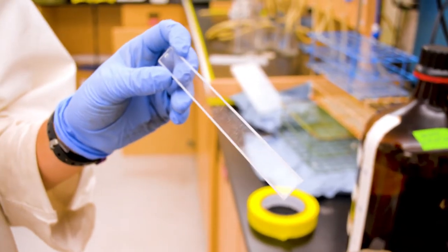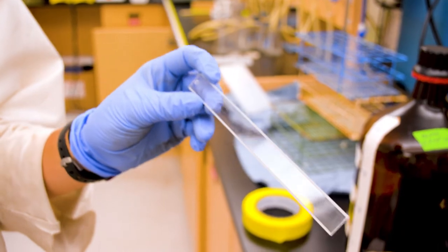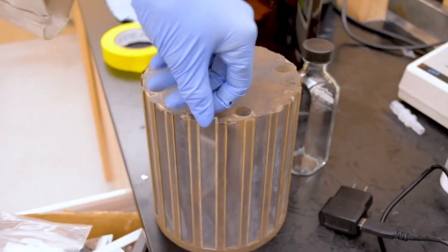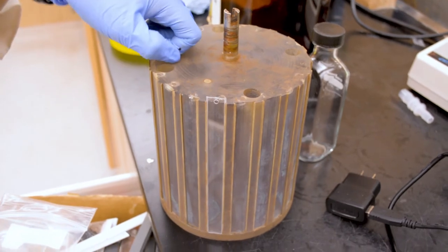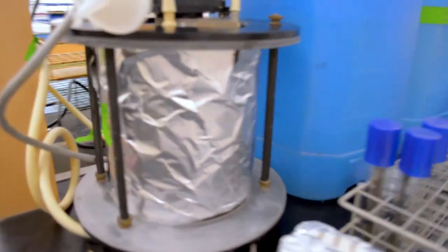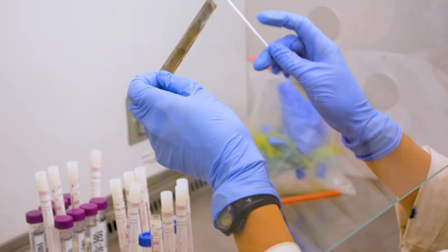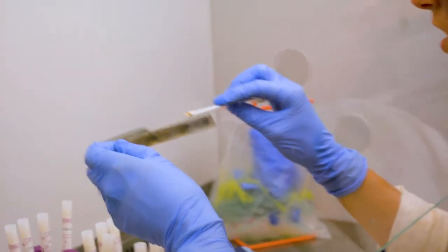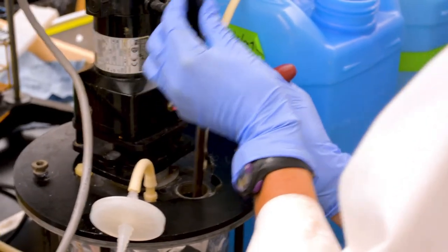We have polycarbonate, we call them coupons. They're just pieces of plastic basically. On one side they've been coated with the graphene coating and they slide into the reactor. Then as the reactor spins, biofilm attaches to it. That's the surface that we swab to remove the biofilm to perform tests.